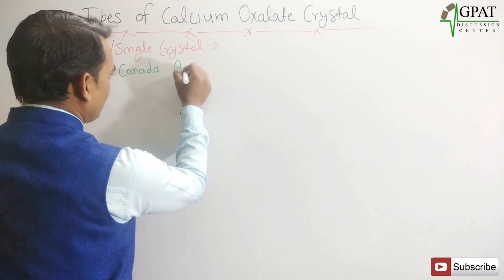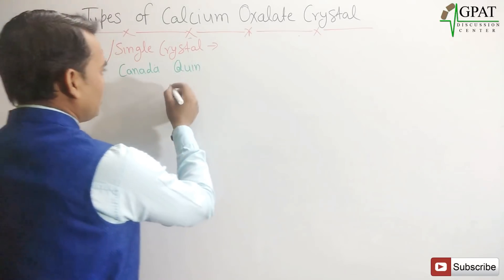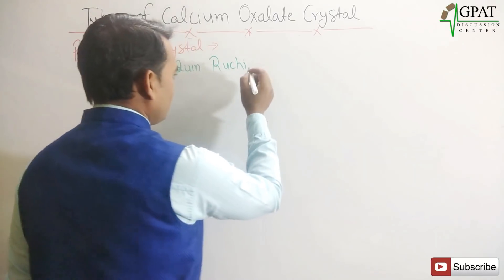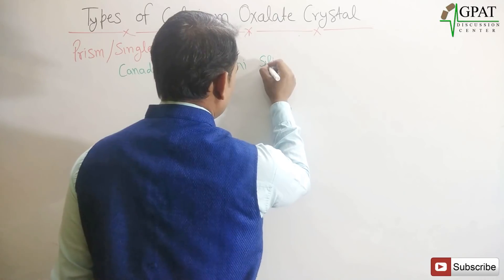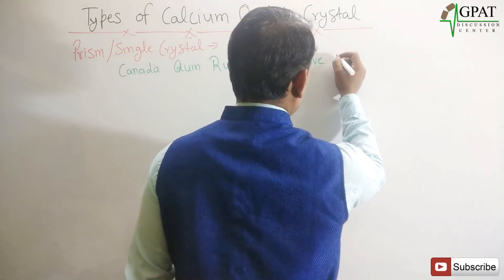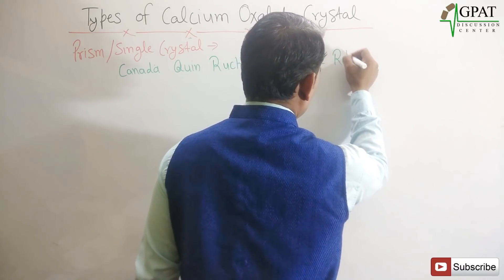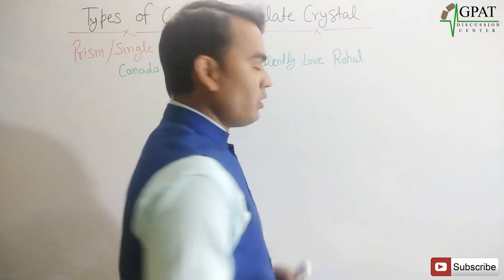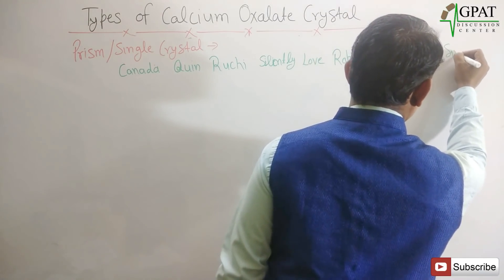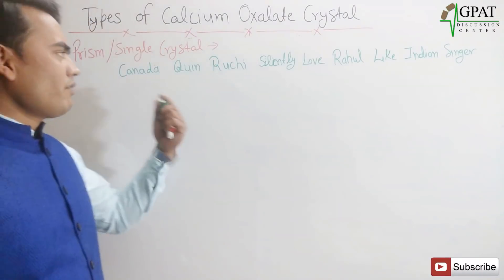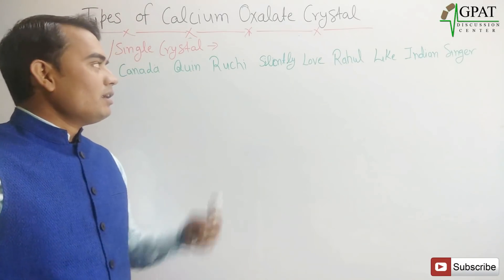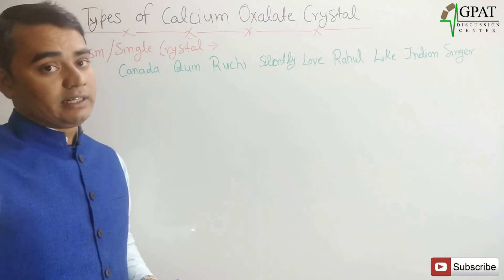The mnemonic is: 'Canada queen Ruchi silently love, Rahul like Indian singer.' Ruchi is the Canada queen, and she silently loves Rahul, who is an Indian singer. All the drugs for prismatic crystal come from this trick.